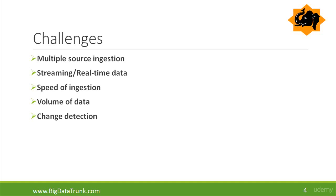Another challenge is the speed of ingestion. Data sources deliver data at varying frequencies — for example, discussion forum digests amount to large data but appear at low frequency like daily or weekly, while tweets are small volumes of data but appear quite frequently. This requires rapid ingestion using parallel processing or multiple input data streams. Volume of data is also a challenge. Additionally, change detection — detecting and capturing changed data — is difficult due to the low latency needed by certain business scenarios.